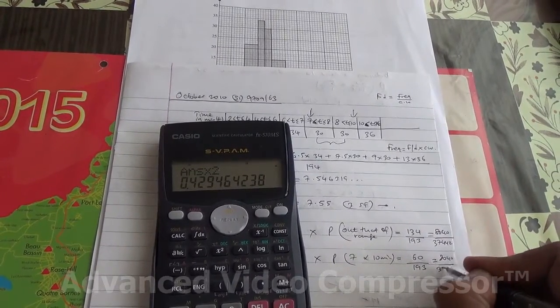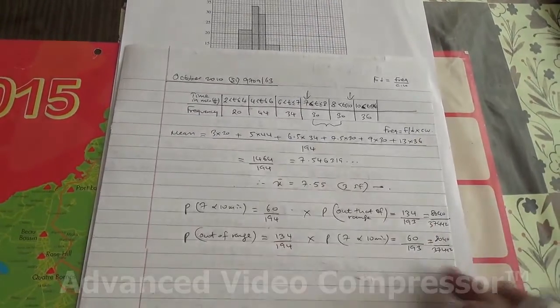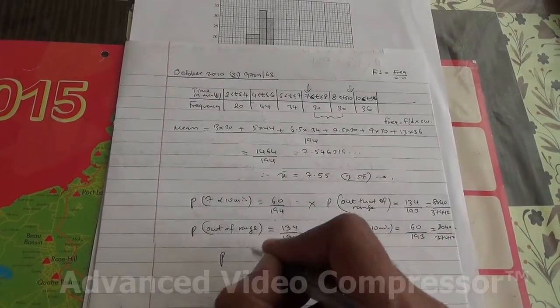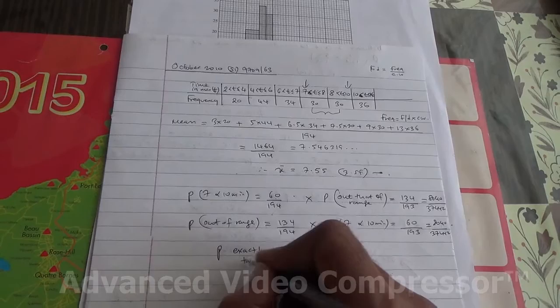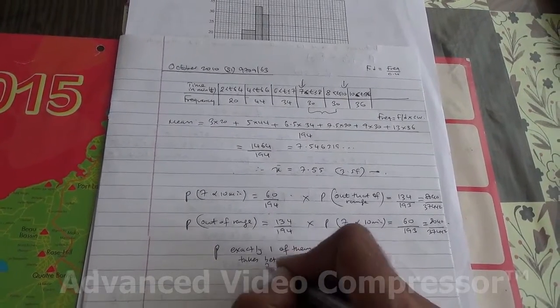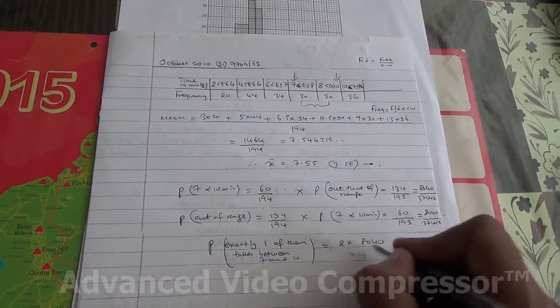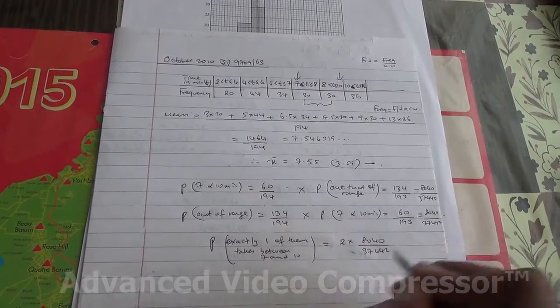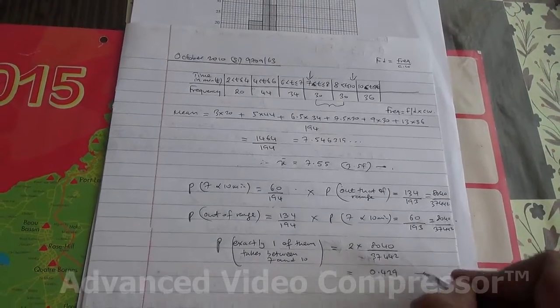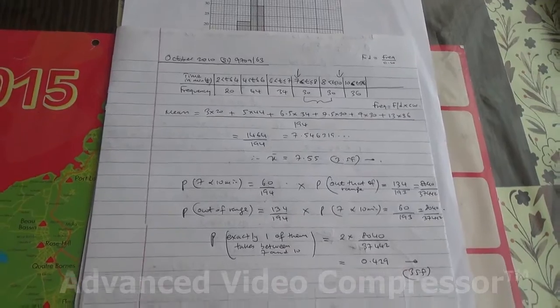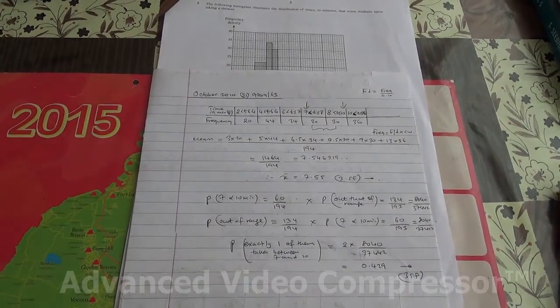So if you add these two up, the probability that exactly one of them takes between 7 and 10 minutes is 2 times 8040 over 37,442, which gave us 0.429 to three significant figures. This question has been taken from October 2010, Advanced Level Maths, HSC Statistics 1. And that was question number 5.